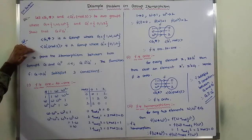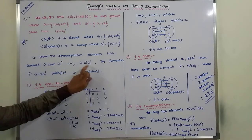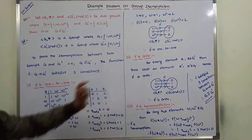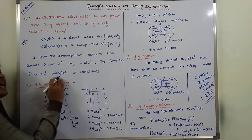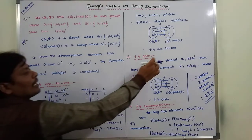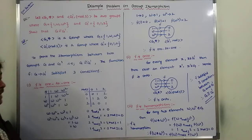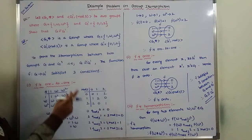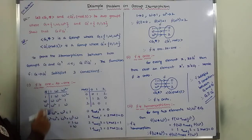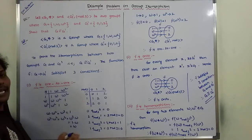To prove the isomorphism between two groups G and G', the function f mapping from G to G' must satisfy three conditions: first, f is one-to-one; second, f is onto; and third, f is homomorphism. By satisfying these three conditions, we can say that there is an isomorphism between G and G'.